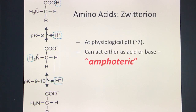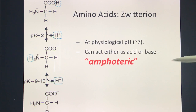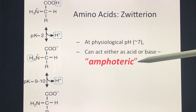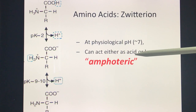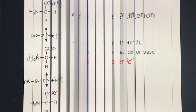Another property of amino acids aside from the zwitterion state is the property of being amphoteric. At a physiological pH of approximately 7, an amino acid can either act as an acid or a base — this is what we call amphoteric. So: zwitterion means doubly charged, and amphoteric means an amino acid can act as either an acid or a base.